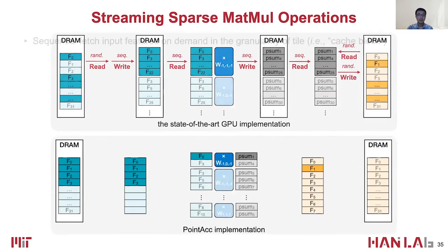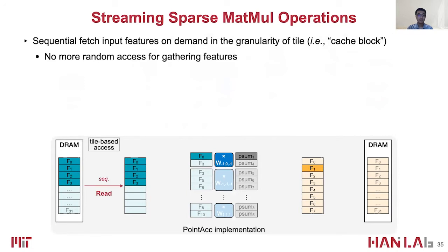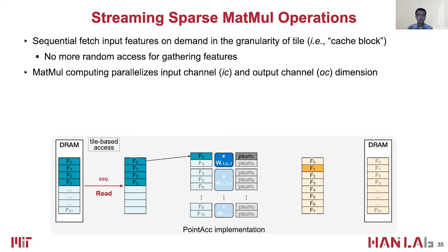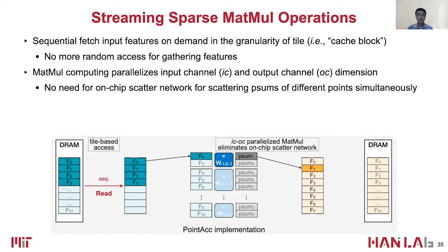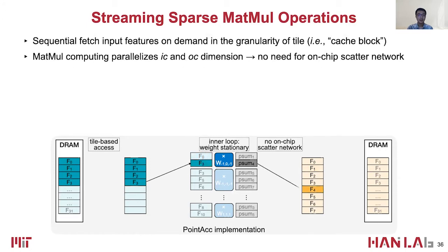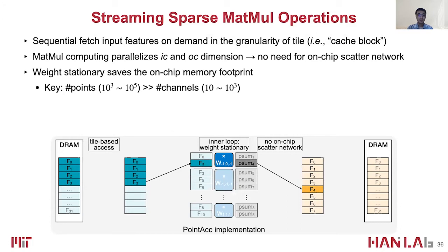In contrast, Point Tech only fetches on-demand input features for computation. The granularity of DRAM access is a tile, similar to a cache block. Point Tech parallelizes the input and output channel dimensions in the matrix multiplication, so it only accesses the partial sums of one output point in one cycle. Hence, there is no need for an on-chip scatter network. Since the number of points is much larger than the number of channels, Point Tech uses weight stationary for the inner loop nest to save on-chip memory footprint for weight data.